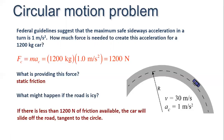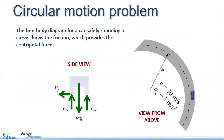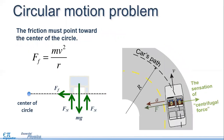If there is less than 1200 N of friction available, the car will slide off the road tangent to the curve. From the side view, friction must point toward the center of the circle. The equation is F = mv²/r, where F is toward the center of the circle and mg is downward.